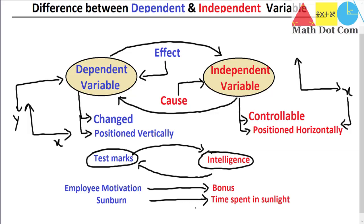Another example: plant growth and amount of water. Plant growth is the effect — plants grow as a result of factors like sunlight, water, and soil. So plant growth is a dependent variable, dependent on other factors. Here, plant growth is the dependent variable and amount of water is the independent variable. The more water you give to the plant, the better it will grow. So plant growth is dependent while amount of water is independent.